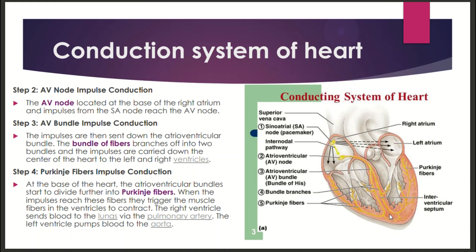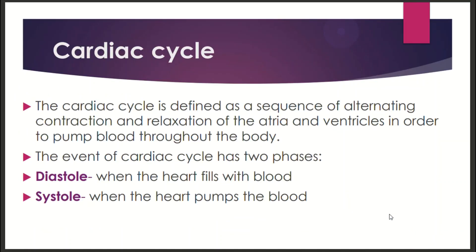The ventricles contract and pump blood to the lungs. The cardiac cycle refers to the alternative contraction and relaxation of the atria and ventricles. This process is called the cardiac cycle.